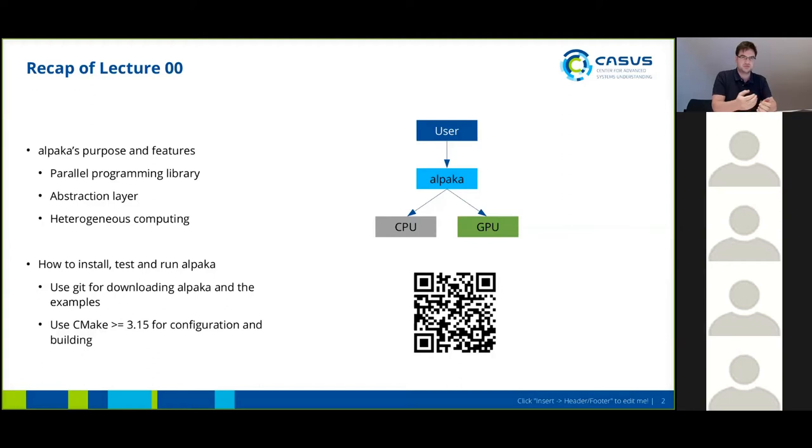Alpaka is also an abstraction layer which tries to abstract away the differences between CPUs and GPUs on one hand and also between different vendor infrastructures on the other hand. For example, you can use Alpaka to access both CUDA GPUs and HIP GPUs.